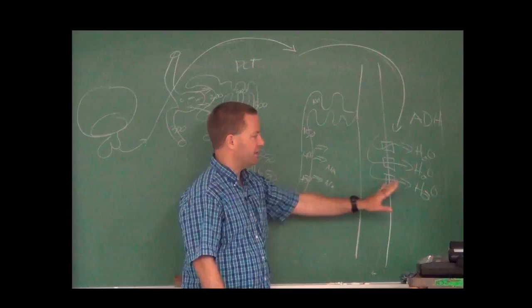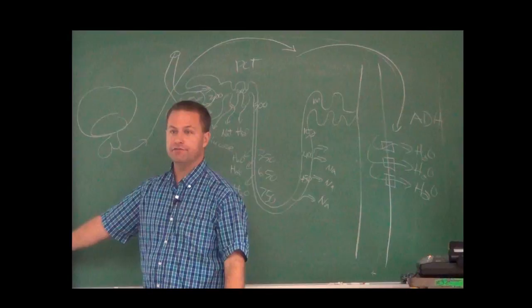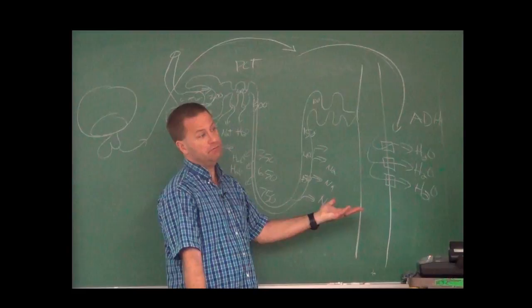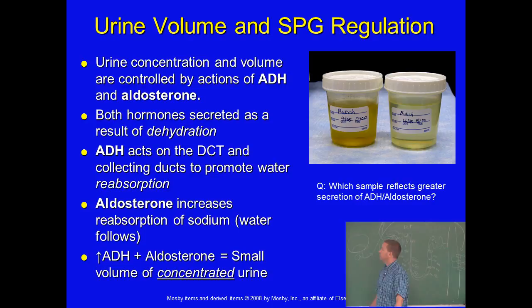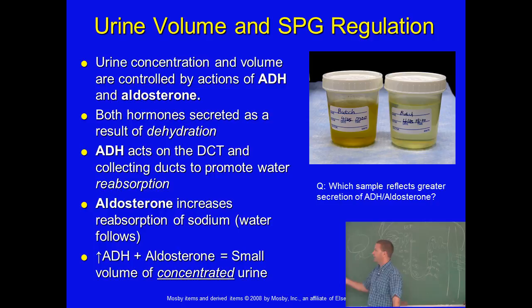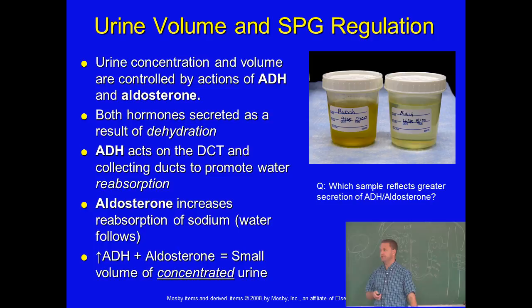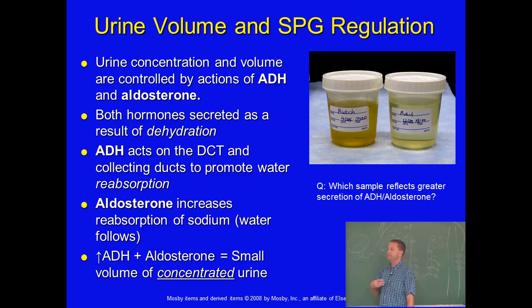ADH helps pull as much water out as possible, producing urine with a very high osmolality — very dark, very yellow. Concentrated urine is seen in animals that are a little dehydrated; often the first urination of the day is darker because the animal hasn't been drinking for eight hours. Two hormones are primarily responsible for regulating the body's ability to concentrate urine: ADH, which acts on aquaporins, and aldosterone, which acts on sodium reabsorption. When we reabsorb sodium, water tends to follow, so both hormones help the body retain water and produce concentrated urine.